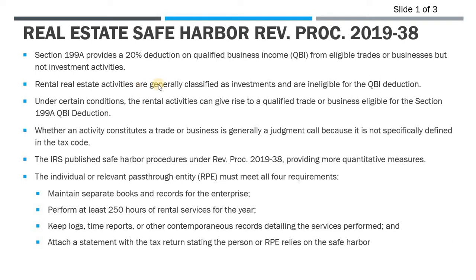Entering here is the safe harbor. The safe harbor published by the IRS, Rev Proc 2019-38, provides more quantitative guidance as to what will give rise to a trade or business in a real estate context. This is important because what constitutes a trade or business under the code really isn't well-defined — we have IRS guidance and tax court cases, but nothing concrete to definitively determine whether we have an active trade or business.